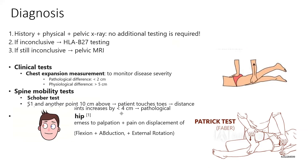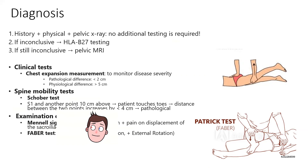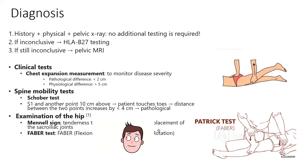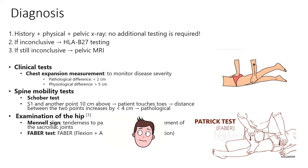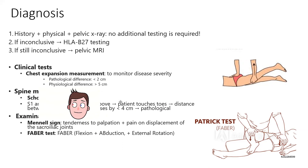Clinical tests include the Schober test: mark a point on the back at the dimples of the lower back, then measure 10 centimeters above that point. When the patient touches their toes, the distance between those two points should increase by more than 4 centimeters — to 14 centimeters or more. If that doesn't happen, it's pathological for restricted spinal motion.